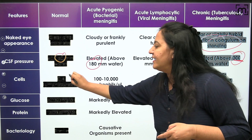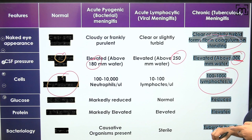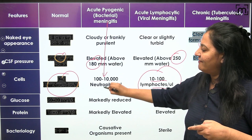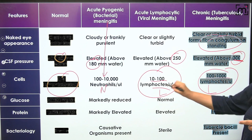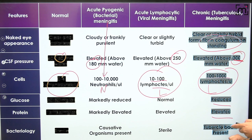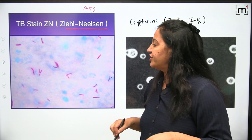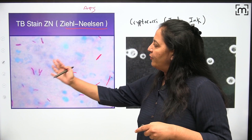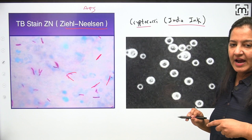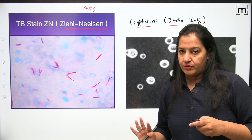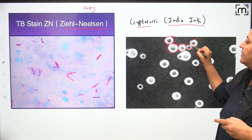In chronic meningitis, CSF cells are lymphocytes 100–1000 per microliter (viral had 10–100; bacterial had neutrophils). Glucose is reduced and protein is elevated. For diagnosis, apply Ziehl-Neelsen (acid-fast) stain for TB — showing red rod-shaped bacilli on a bluish necrotic background. For Cryptococcus, apply Indian ink (a negative stain) — the capsulated fungus appears white/transparent on a black background.